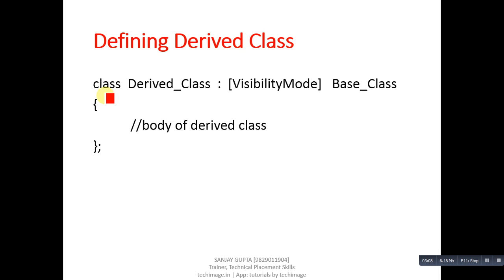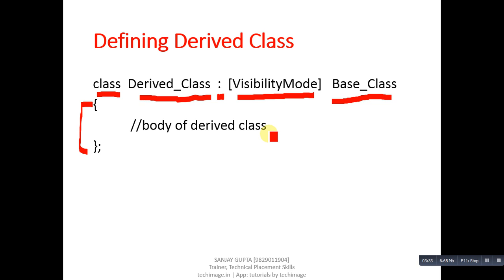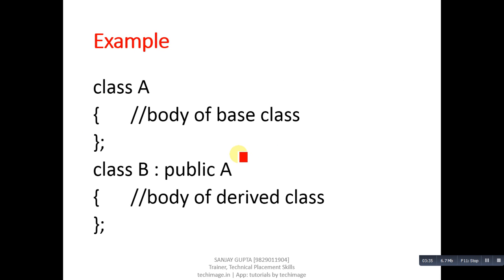This is the syntax of inheritance, showing the definition of a derived class. First you use the class keyword, then the name of the derived class, then a colon symbol which represents inheritance. Then you mention the visibility mode — which can be private, protected, or public, explained in the next slides — followed by the name of the base class you want to inherit.